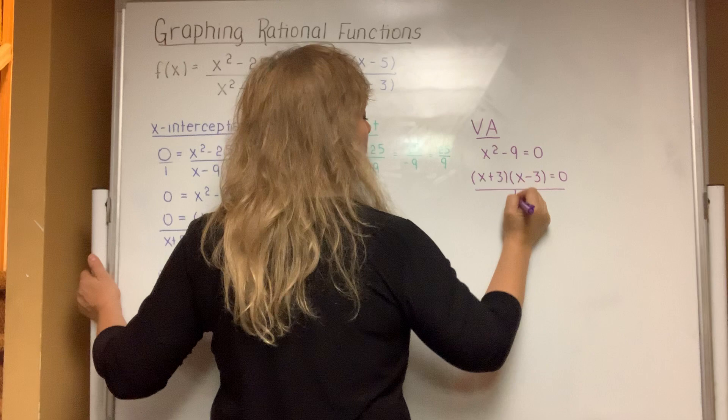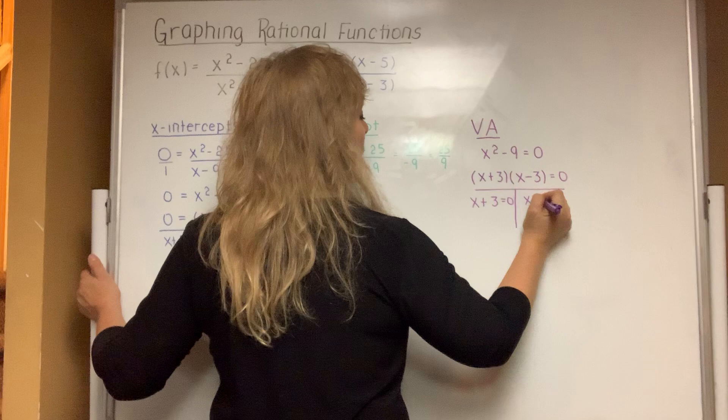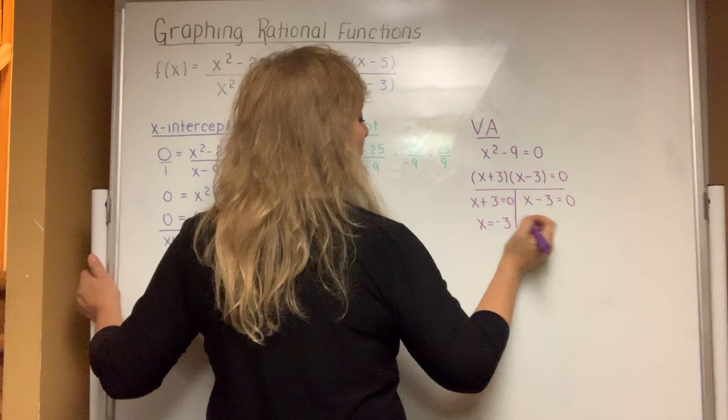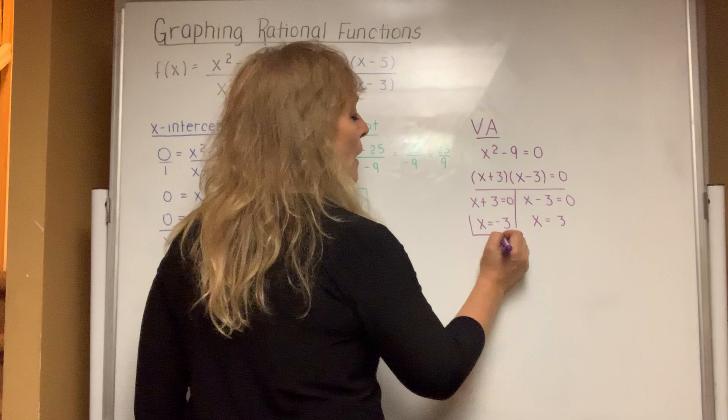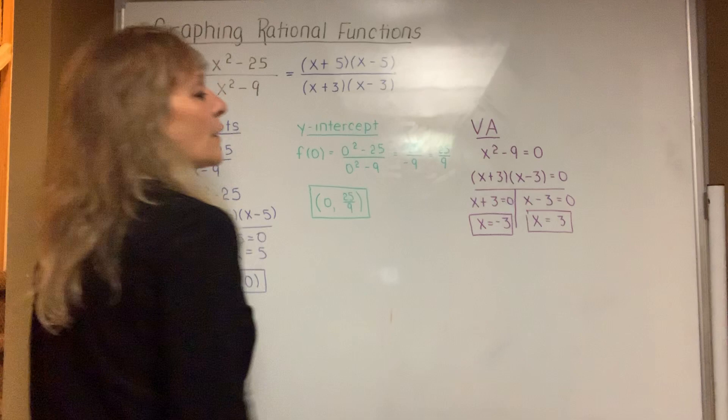Set each factor equal to zero and you'll end up with two answers. A vertical asymptote is a line, and the way you write down lines is different from the way you write down points. The x-intercepts are points, the y-intercept is a point, but any time you want to express a line, you leave the equal sign in the answer. Those are the two vertical asymptotes.